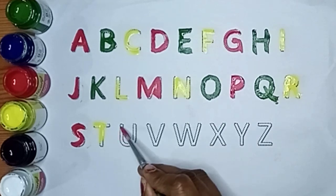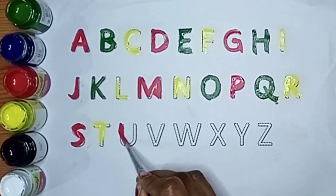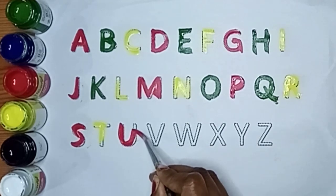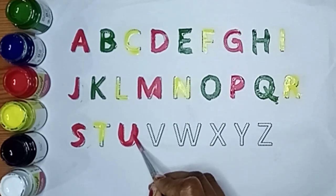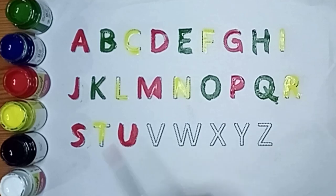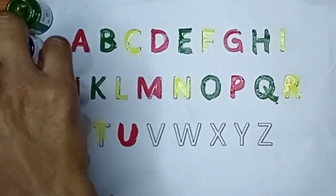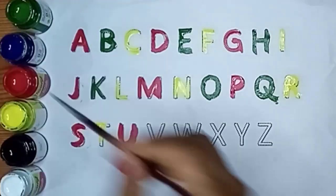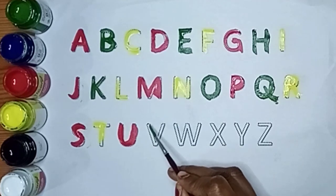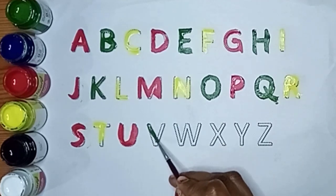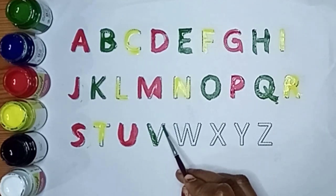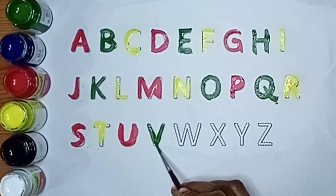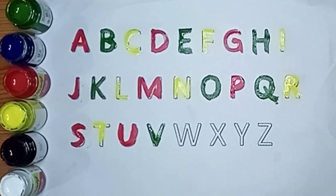Red color. U. U for umbrella. Green color. V. V for vegetables.